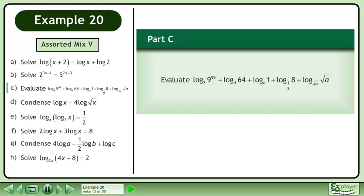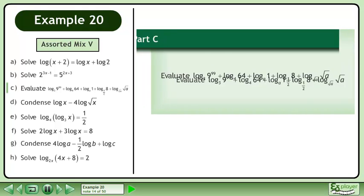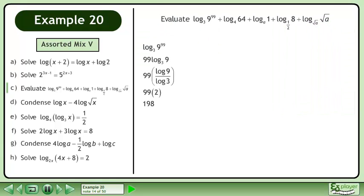In Part C, evaluate the expression shown. Evaluate the base 3 logarithm of 9^99 to get 198. Evaluate the base 4 logarithm of 64 to get 3.